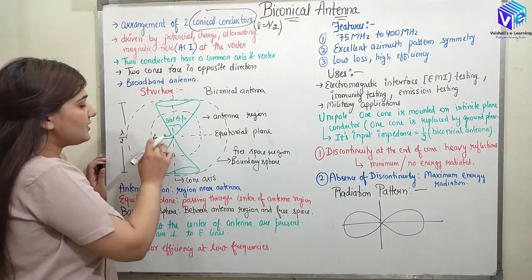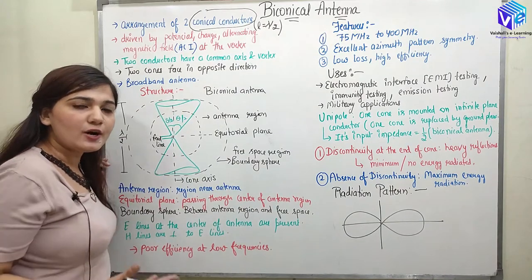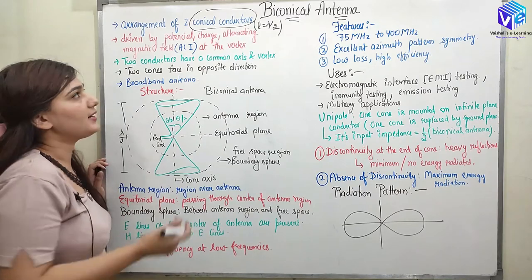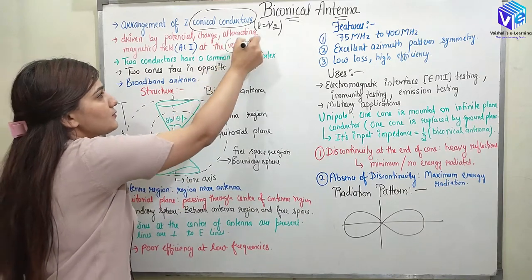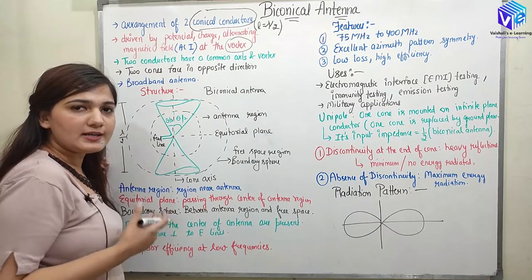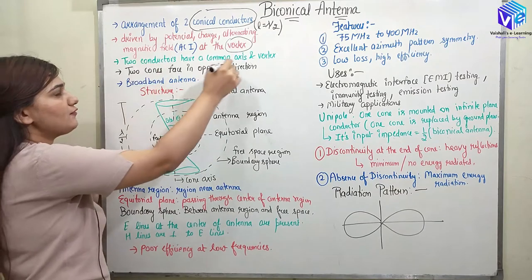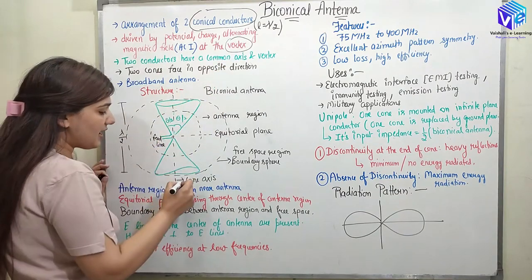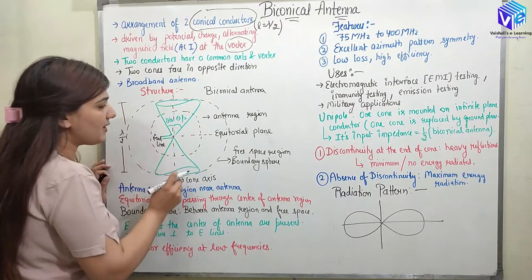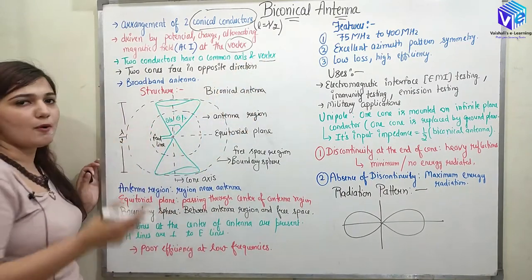It is driven by the potential, the charge, the alternating magnetic field, or the alternating current. At the vortex we will be having the potential, the charge, the alternating magnetic field, or the alternating current. We have two conductors with a common axis, and the vortex is also common.